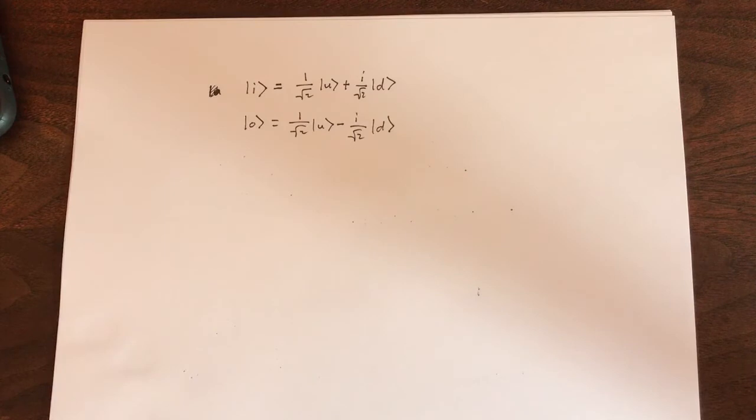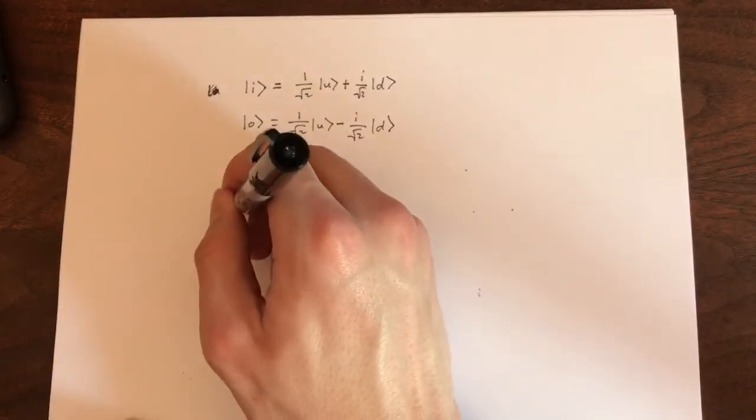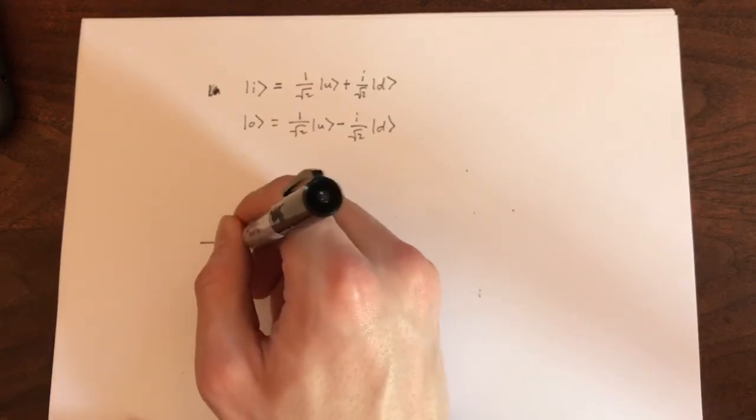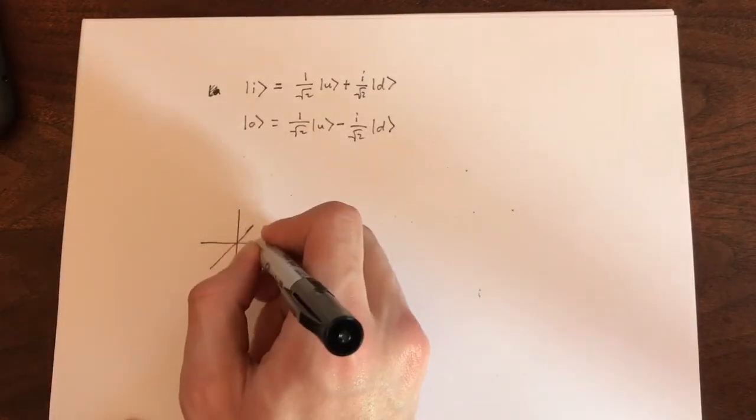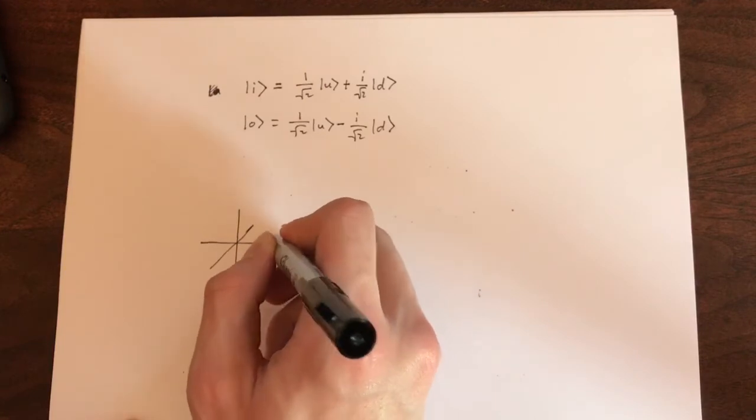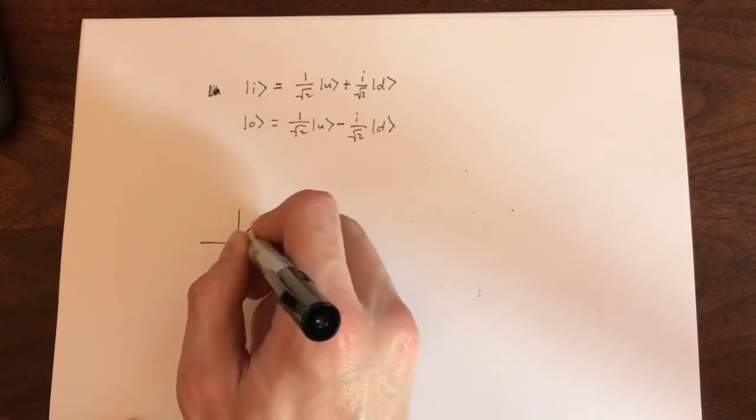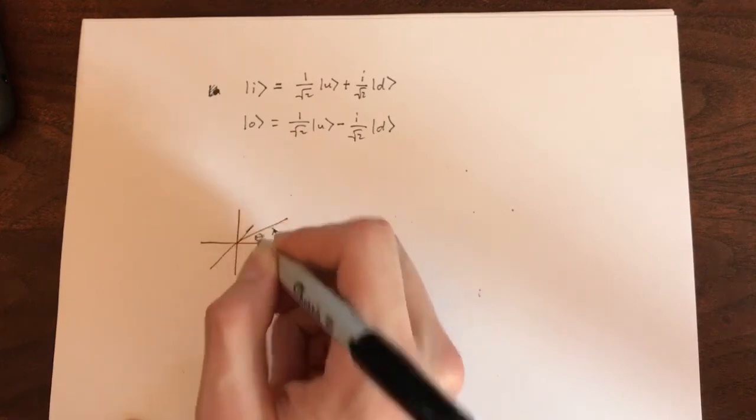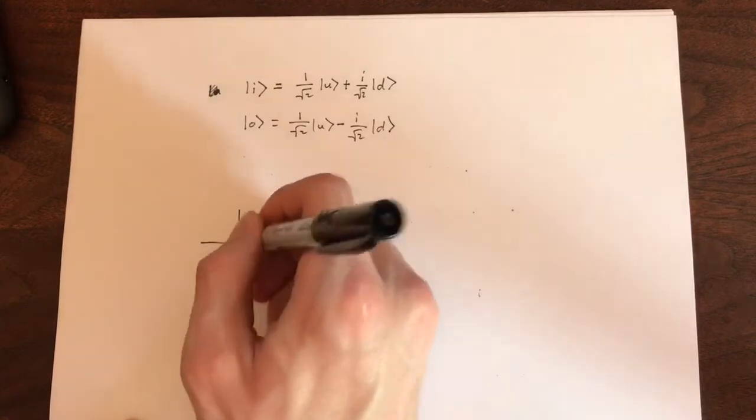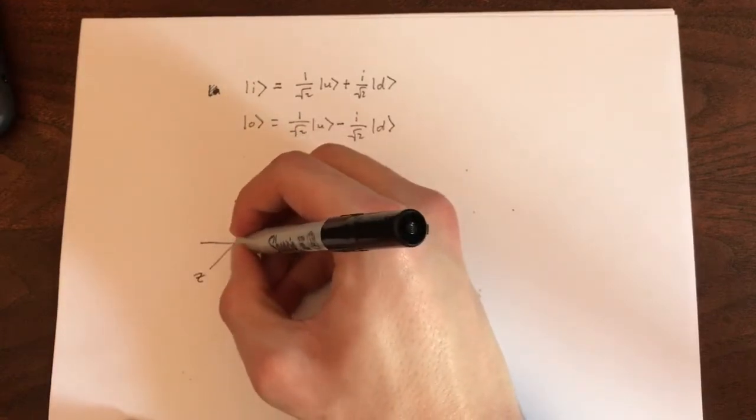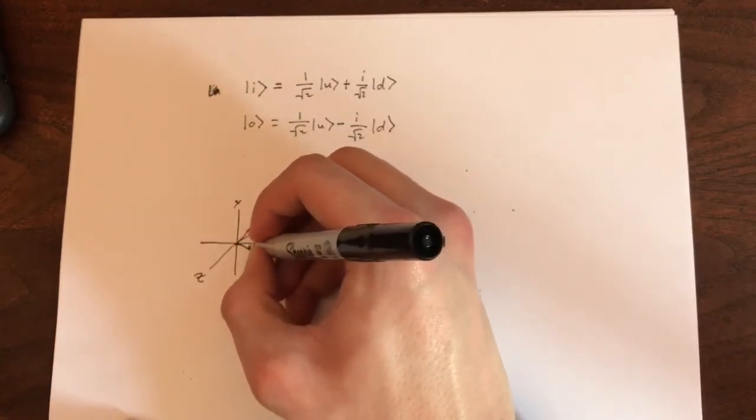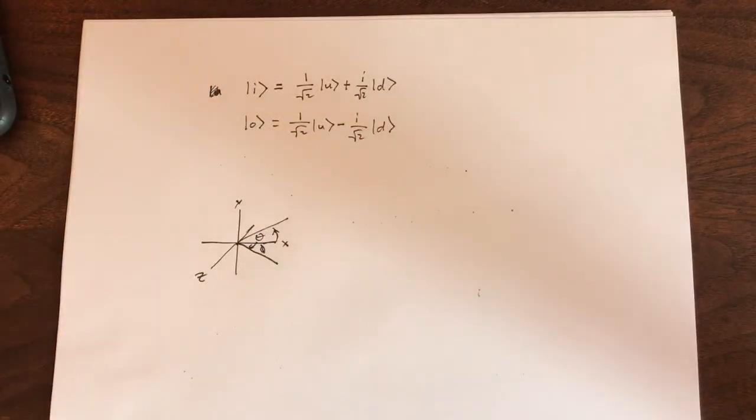All right, finally we're going to take a look at parameters. How many numbers or parameters do you need to specify one spin state? There are two ways to look at this. Firstly, if you're using spherical coordinates, it takes two angles to specify any direction in space. If you start at the x-axis, you first need a certain angle up towards the y-axis, we'll call that theta for now, and then you need another angle out towards the z-axis, which we'll call phi. So you need two numbers.